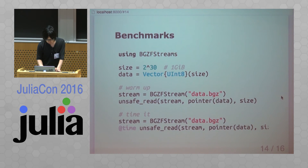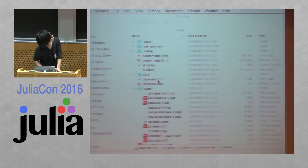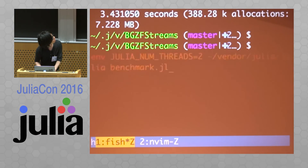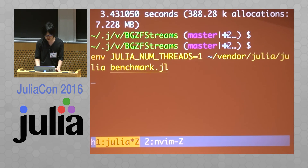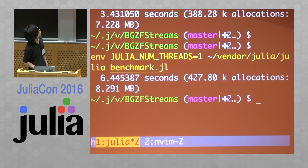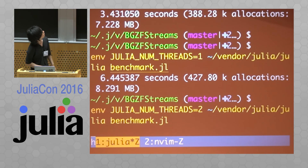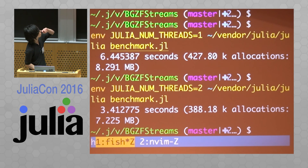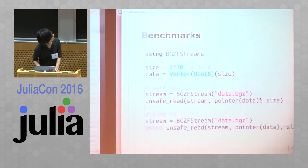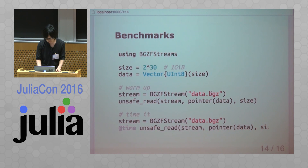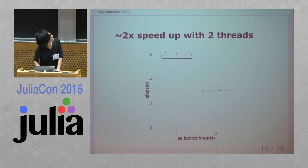Here is a benchmark decompressing one gigabyte of data. The single-threaded version requires about 6.4 seconds. This laptop has two physical cores, so we can try two threads. The performance gain is very dramatic — it almost cuts the elapsed time in half, giving about a 2x speedup with two threads.